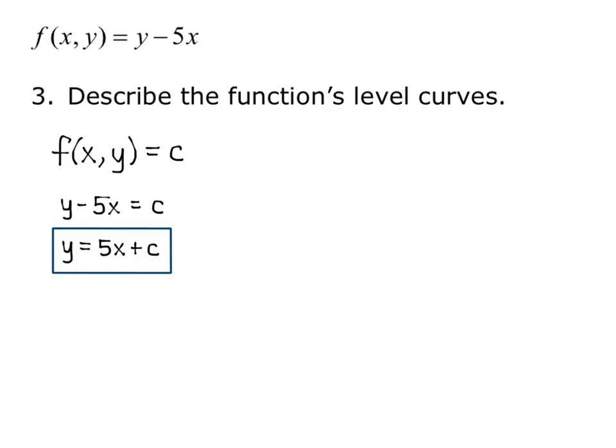and we get y equals 5x plus c. This is the set of all lines of slope 5. The y-intercept will change for different values of c, but the slope will always be 5.